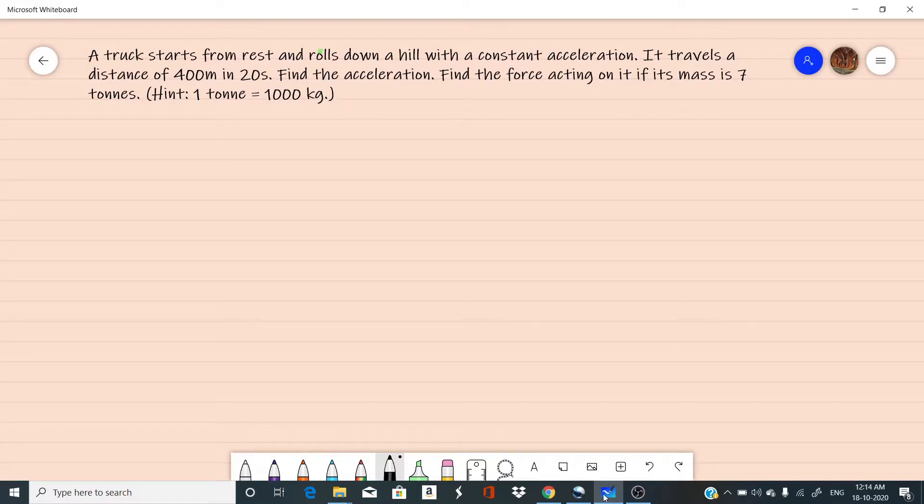A truck starts from rest and rolls down a hill with a constant acceleration. It travels a distance of 400 meters in 20 seconds. Find the acceleration. Find the force acting on it if its mass is 7 tons. Hint: 1 ton equals 1000 kg.